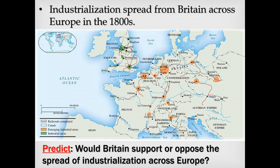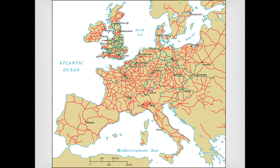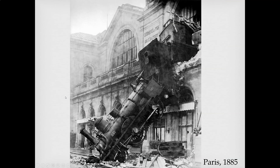You also have to think about why Britain would have been opposed to the spread of industrialization. They were opposed because they had the advantage — when they were the only people with factories and railroads, they had a huge advantage over other countries. They didn't want these ideas to spread for fear of losing their dominance. Nonetheless, technology does spread out, as you can see in these railroad lines across Europe — green for early ones, red for slightly later.